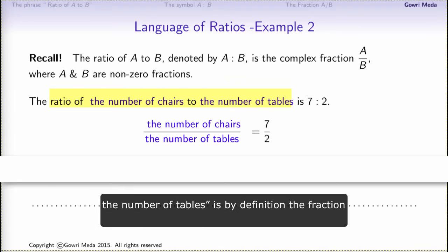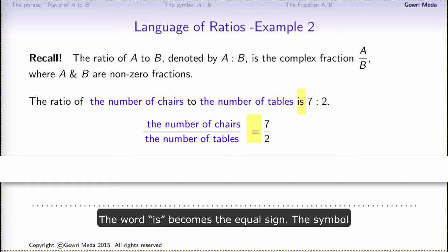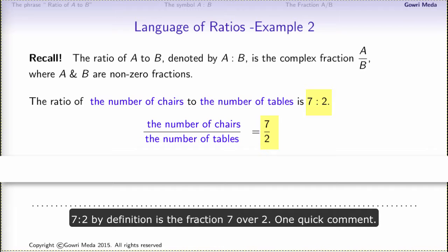The phrase 'the ratio of the number of chairs to the number of tables' is by definition the fraction: the number of chairs over the number of tables. The word 'is' becomes the equal sign. The symbol 7 to 2, by definition, is the fraction 7 over 2.